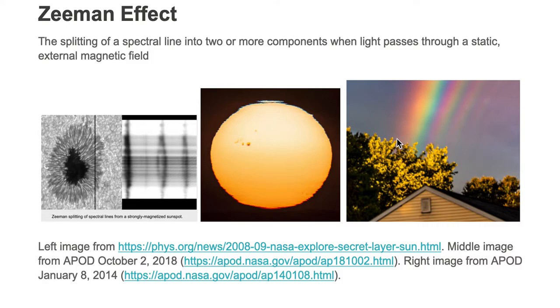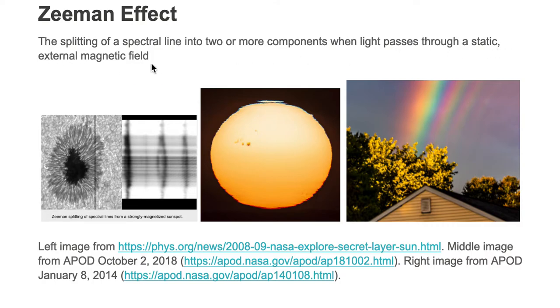Now we want to split this berry cherry red line into two or more components. We can do that by passing this berry cherry red light through a static external magnetic field.